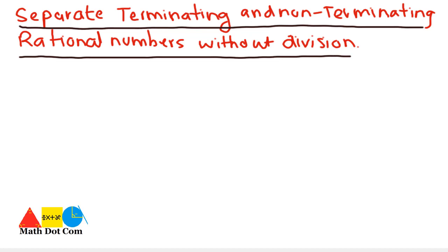After understanding the concept of terminating and non-terminating numbers, we will see today how you can identify them without division. There is a rule that you have to follow in order to identify which ones are terminating and which ones are non-terminating.